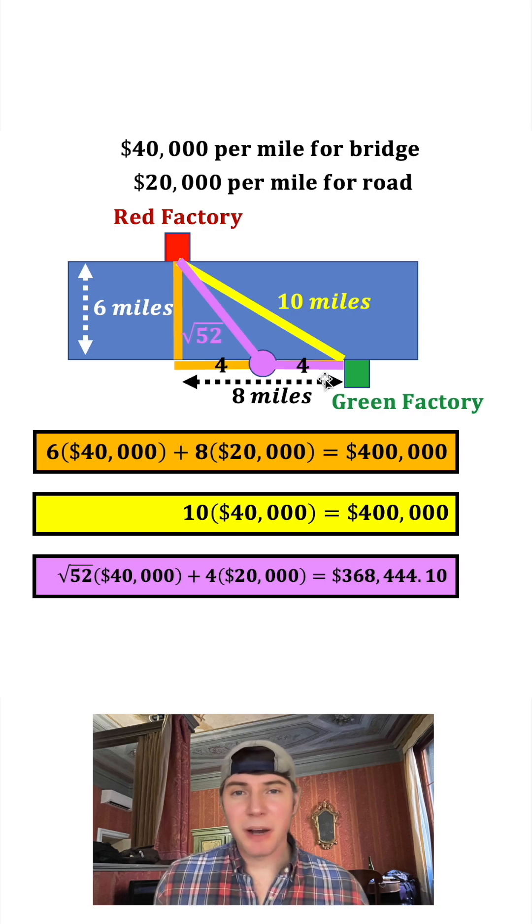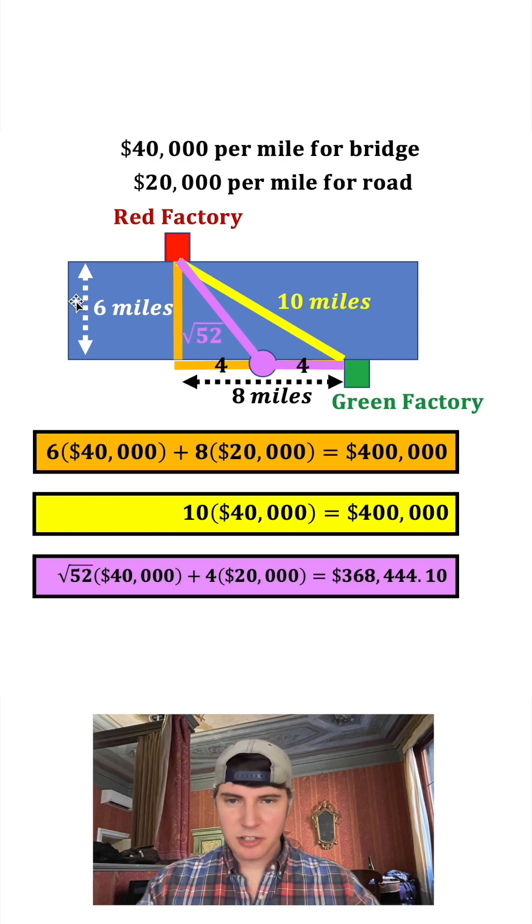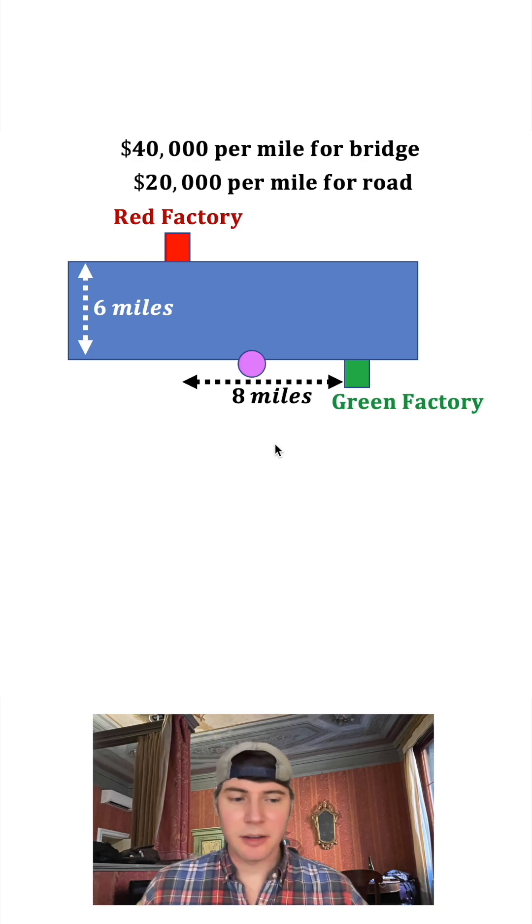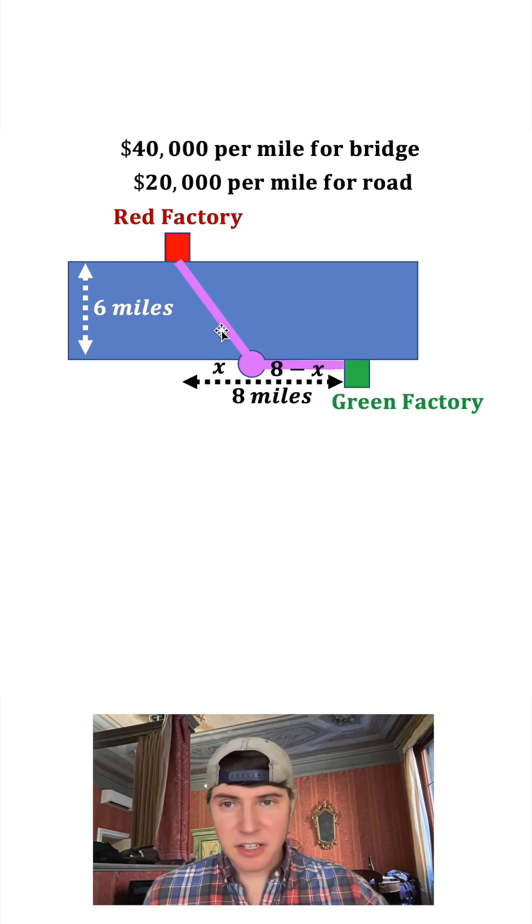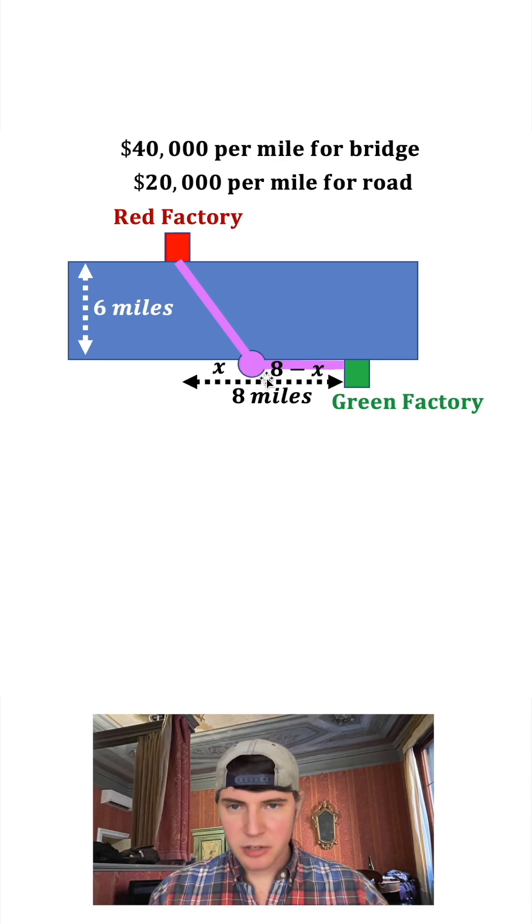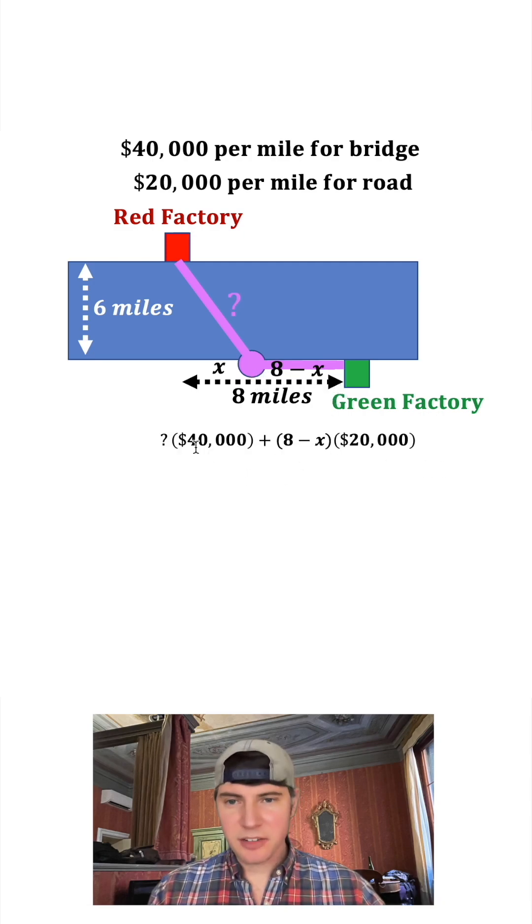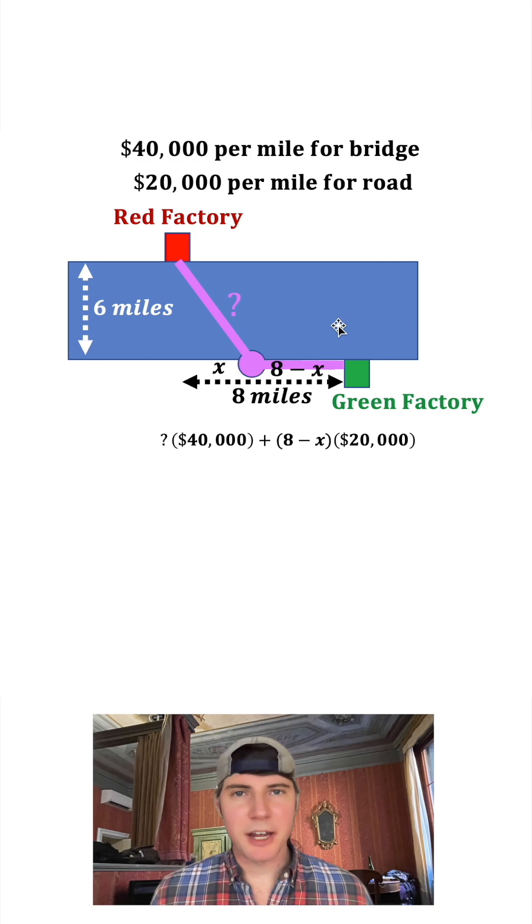But let's find the spot that costs the least amount of money. We'll pick a random pink dot and call this distance x, and then the rest would be 8 minus x. We want to find the value of x that makes this pink path the lowest possible cost. The road is going to be 8 minus x times $20,000 and then $40,000 times the length of the bridge.